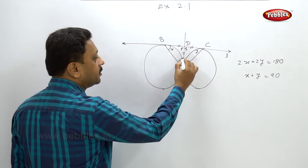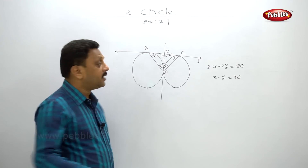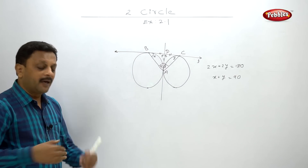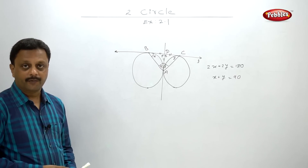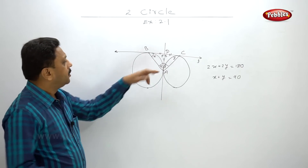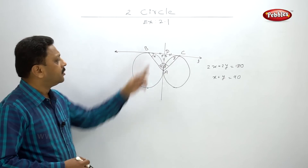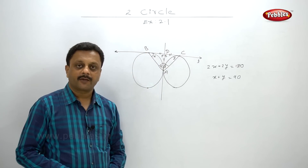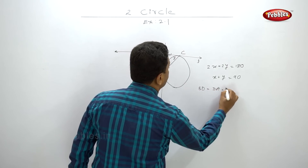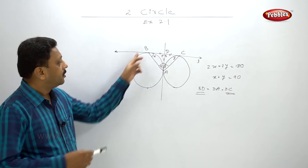Since DB equals DA and DA equals DC, we have BD equals DC. Hence D is the midpoint of segment BC.